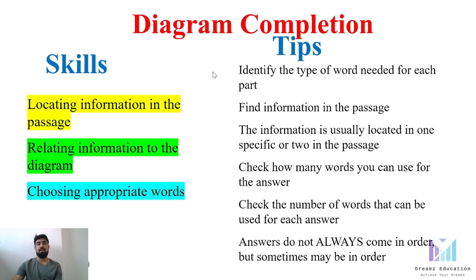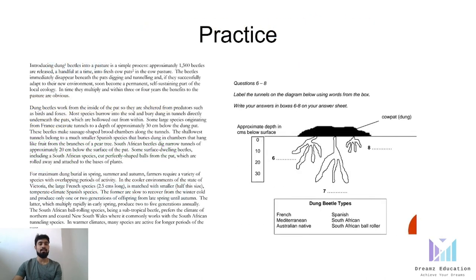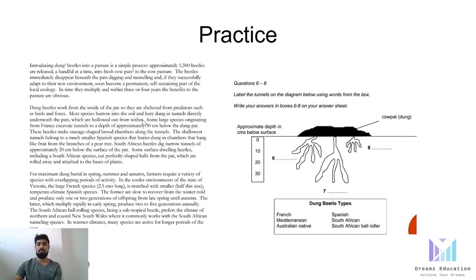So, what is the task in diagram completion? It looks something like this. There will be a passage or a short note that is given usually, and there will be a diagram given to you. In this case, this is question number 6 to 8, which means there are other types of questions associated with this paragraph or passage as well.